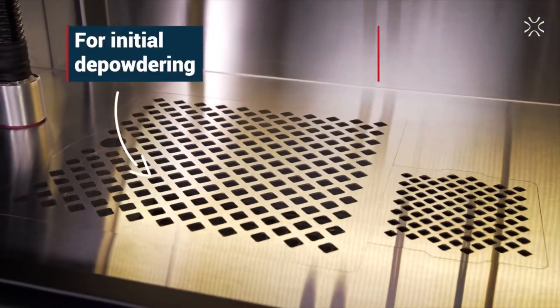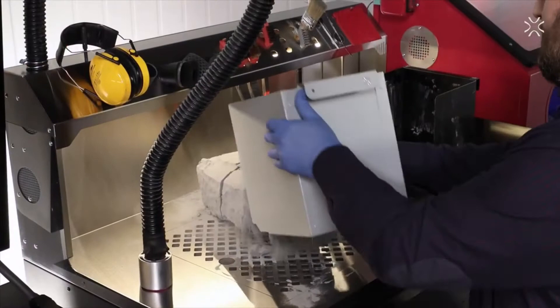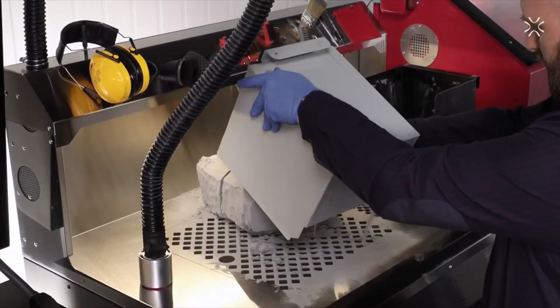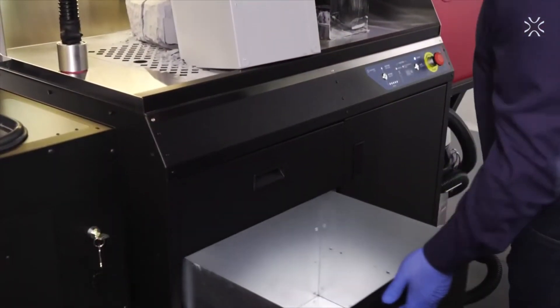You can see two grids, a larger and a smaller one. Start cleaning the print on the larger one where initial depowdering takes place and finish on the smaller one. Remember all the tools that you need are always at hand.